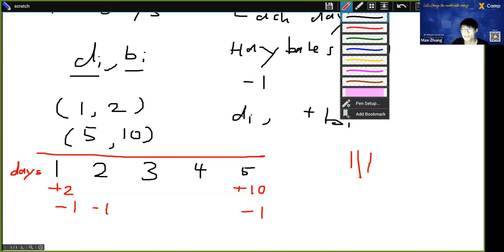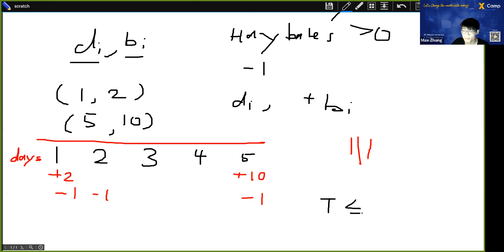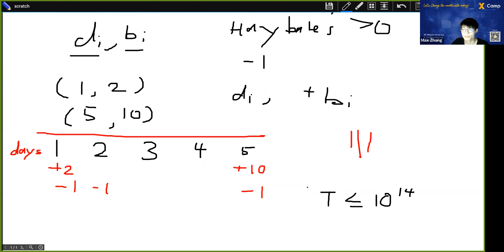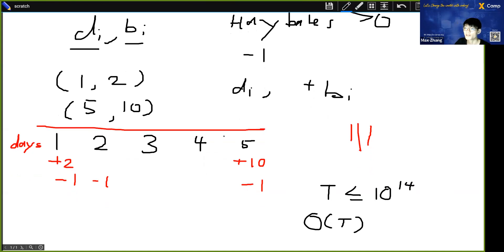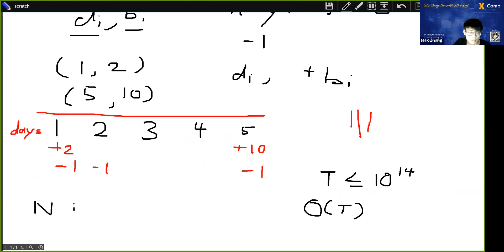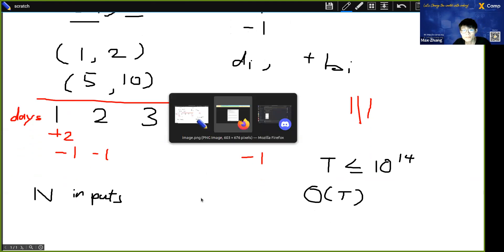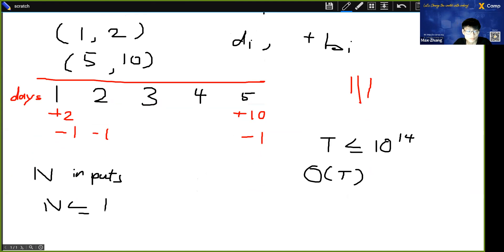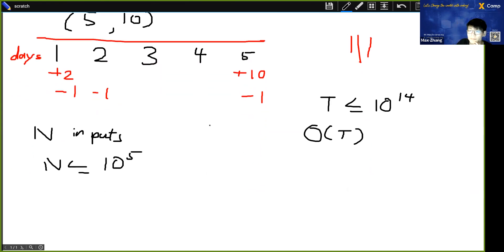This is a little bit too slow because the T, this total number of days, could be at most 10 to the 14. So this is an O of T solution. We iterate over every single day. It would be a little too slow. So let's try to make this a little bit faster. And to make this a little faster, we simply note that on a lot of the days, because there are only at most N inputs, right? N inputs, where N is much smaller. N is up to 10 to the 5. So a lot of the days we're not actually receiving any new hay bales. So we know exactly what's going to happen, which is that we simply minus one, minus one, minus one, and so on. So we don't have to really simulate every single day. We can instead skip to whenever new hay bales are added. And those are the only cases where something changes. Otherwise, we know you just subtract as many days as we can.